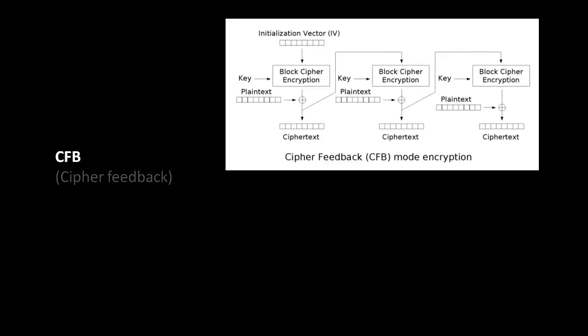In CFB mode, Cipher Feedback mode, we again use an initialization vector, but this time we actually start off by encrypting the initialization vector itself. The result of that we then XOR with our plaintext to get our first block of ciphertext. Then it's that first block of ciphertext which we encrypt for our second block, and the result of that we XOR with the second block of plaintext to get our second block of ciphertext.